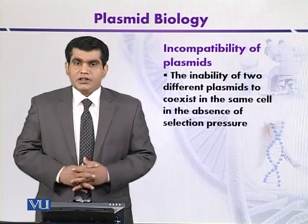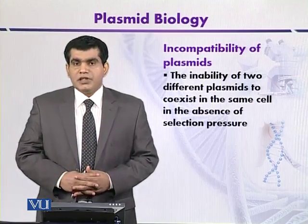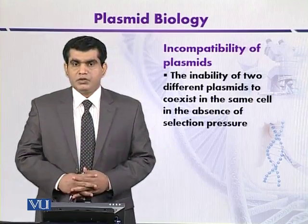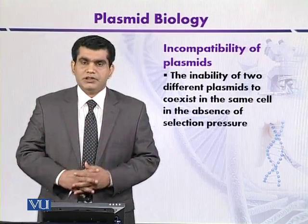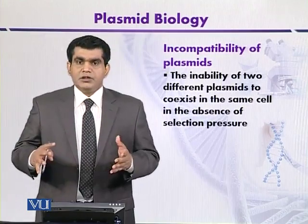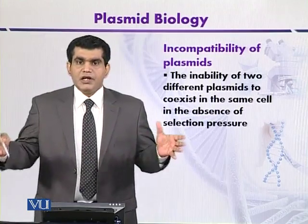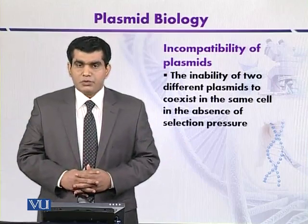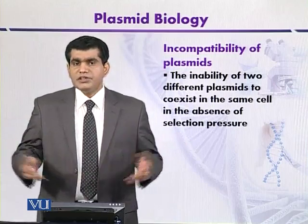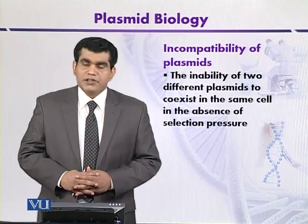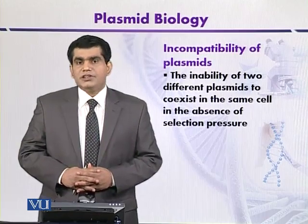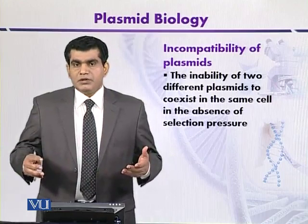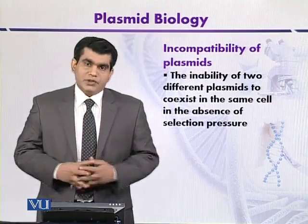So what is the reason that plasmids are not compatible with each other? Different plasmids cannot colonize or live together in the same host. The reason is that this incompatibility is determined by the origin of replication and even the par region of the plasmids.